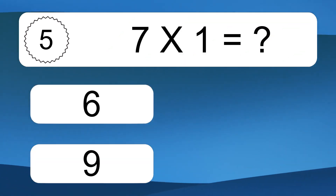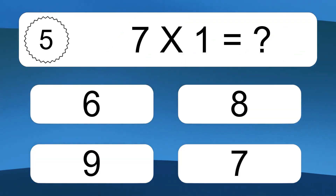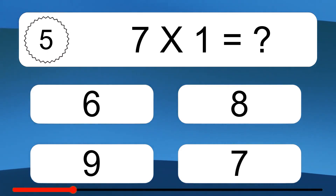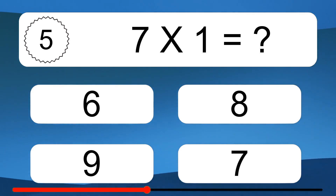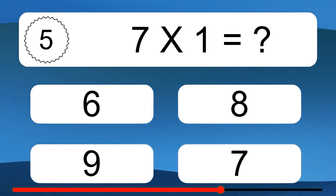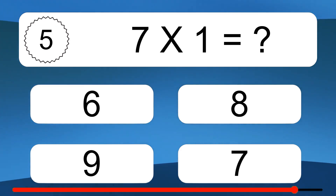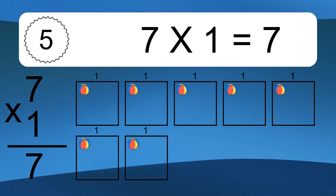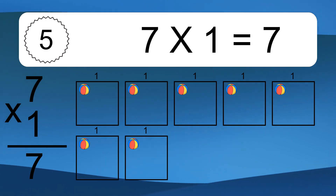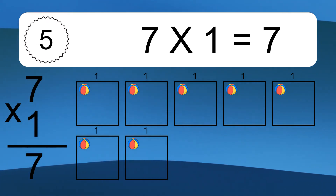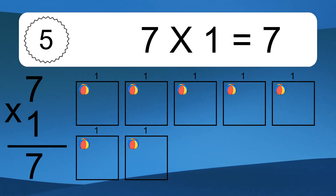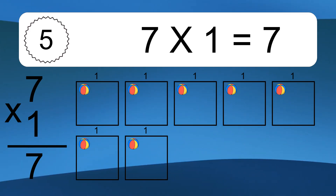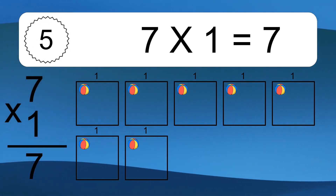7 times 1. We have boxes and each box has 1 colorful ball inside. If you count all the balls in all the boxes together, you will have 7 times 1 balls. This equals 7 balls.